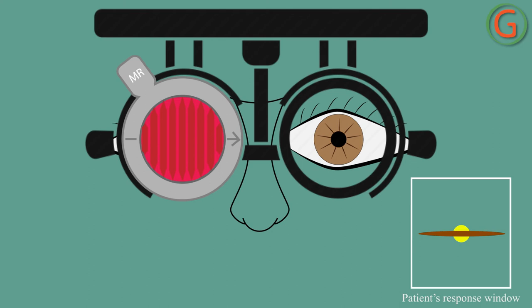Right hypophoria is when the line is seen above the light source. Put the base of the prism down on the left eye until the line is in the middle. Right hyperphoria occurs when the line is seen below the light source. Put the base of the prism up on the left eye until the line is in the middle.